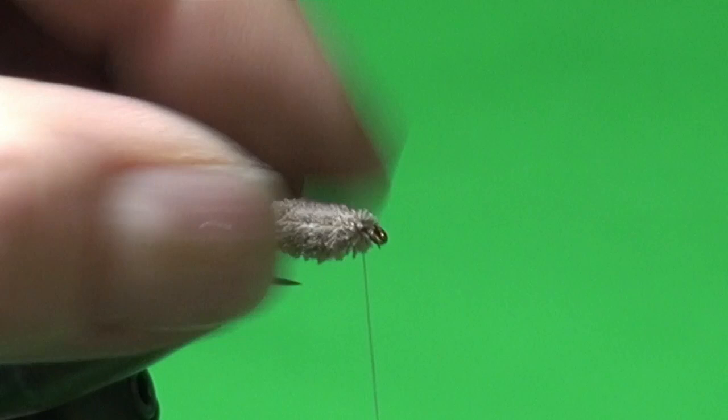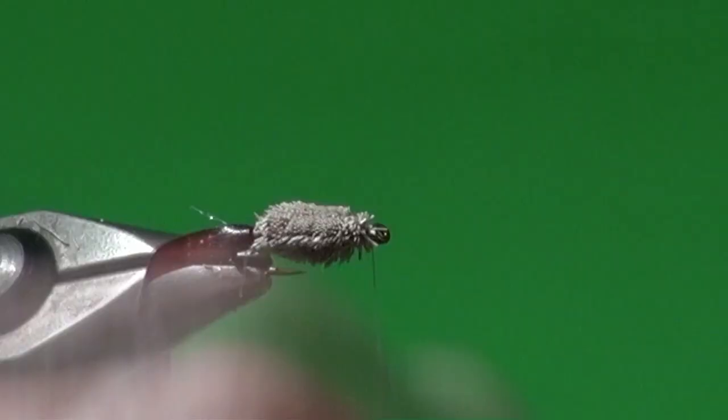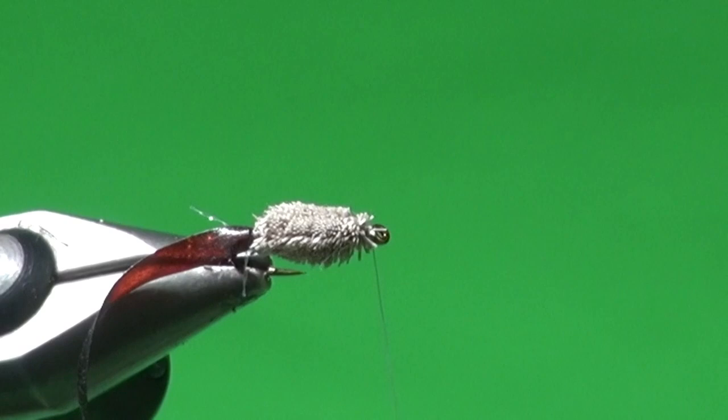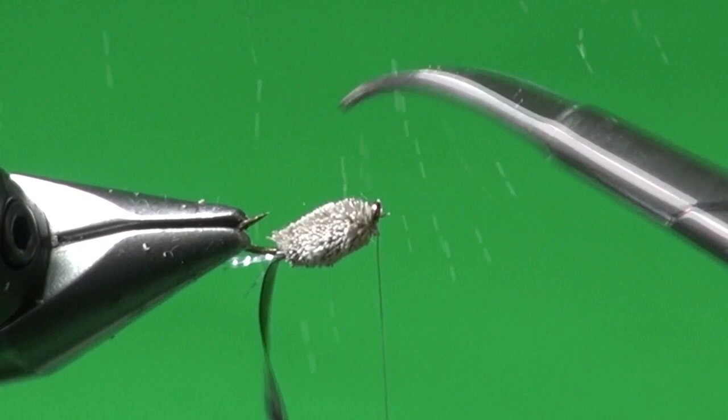The unfortunate part of doing deer hair is you will trim to your heart's content. Pull that over. That's going to give me a bit of a dark back on there just like the natural boatman. I might even trim that a little bit more. And you can get the general idea.